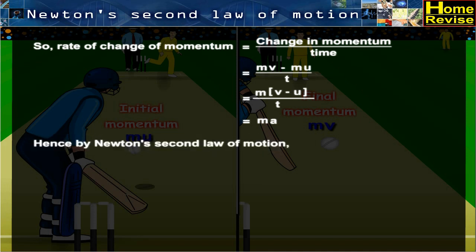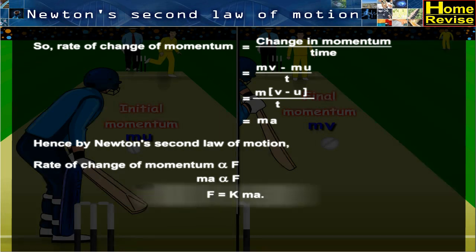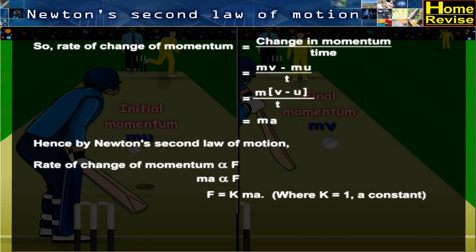Hence, by Newton's Second Law of Motion, rate of change of momentum is directly proportional to F. That is, MA is directly proportional to F. So, F is equal to KMA, where K is equal to 1, a constant.